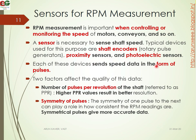The data is sent from the sensors in the form of pulses — digital data is sent. The quality of this data depends upon two things: the number of pulses per revolution, and symmetry.